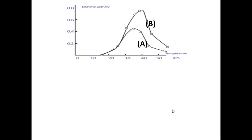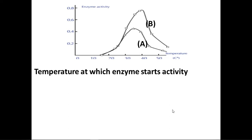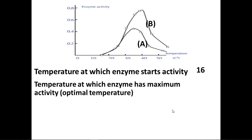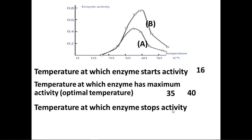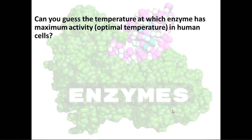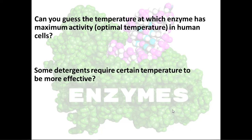From this graph, the temperature at which the enzyme starts activity is around 16°C for both enzymes A and B. The optimal temperature — at which enzyme activity is maximum — is 35°C for enzyme A and 40°C for enzyme B. The temperature at which enzyme stops activity is almost 55°C for both, so the range for both is between 16°C and 55°C. The optimal temperature for enzymes in human cells is 37°C. Some detergents require a certain temperature to be more effective because they contain enzymes that have an optimal temperature at which they work at their highest activity.